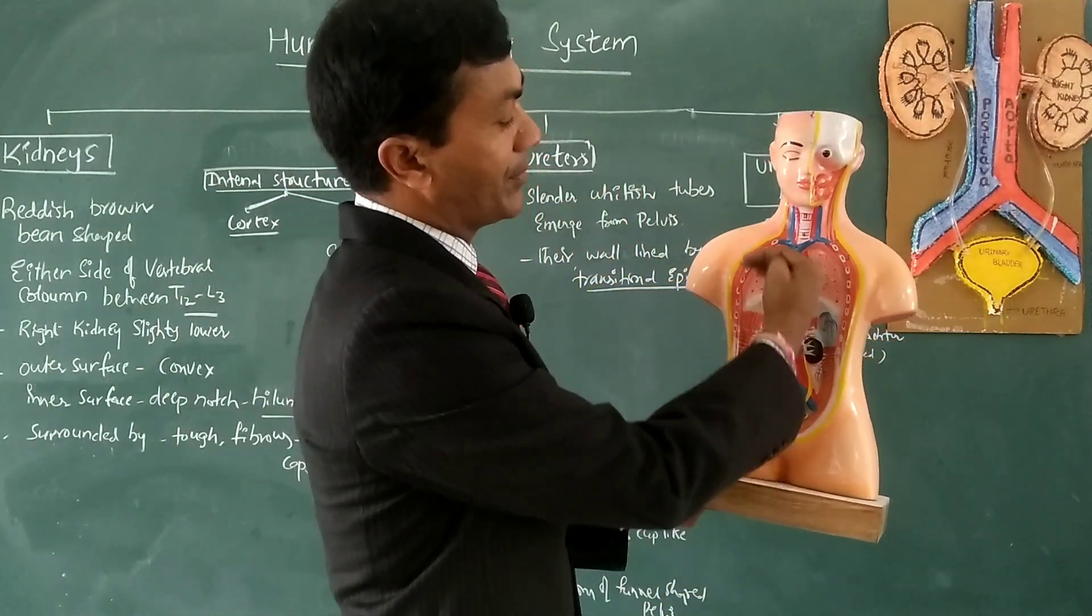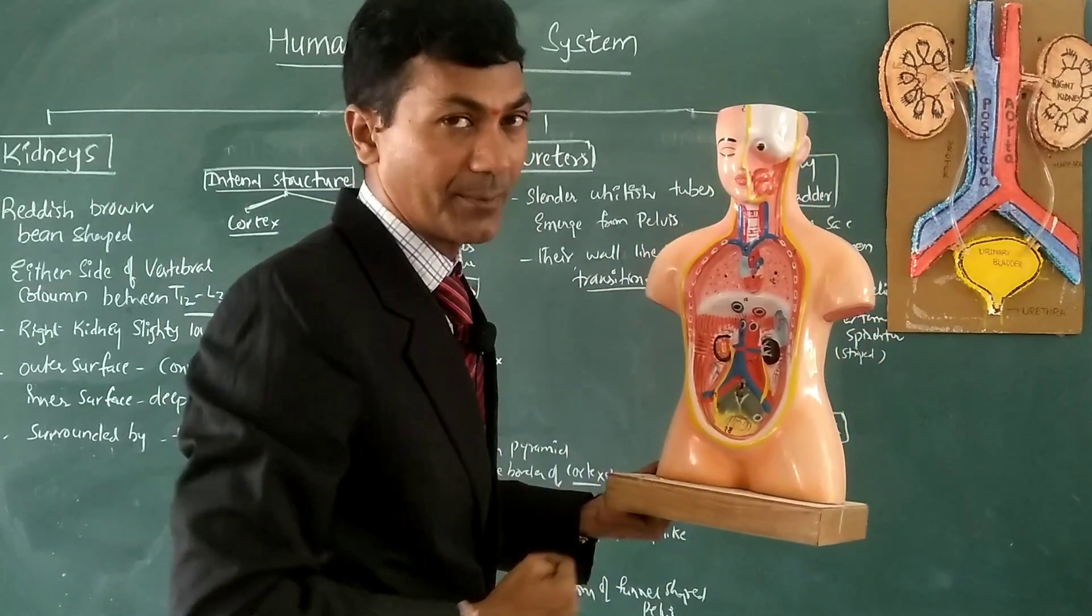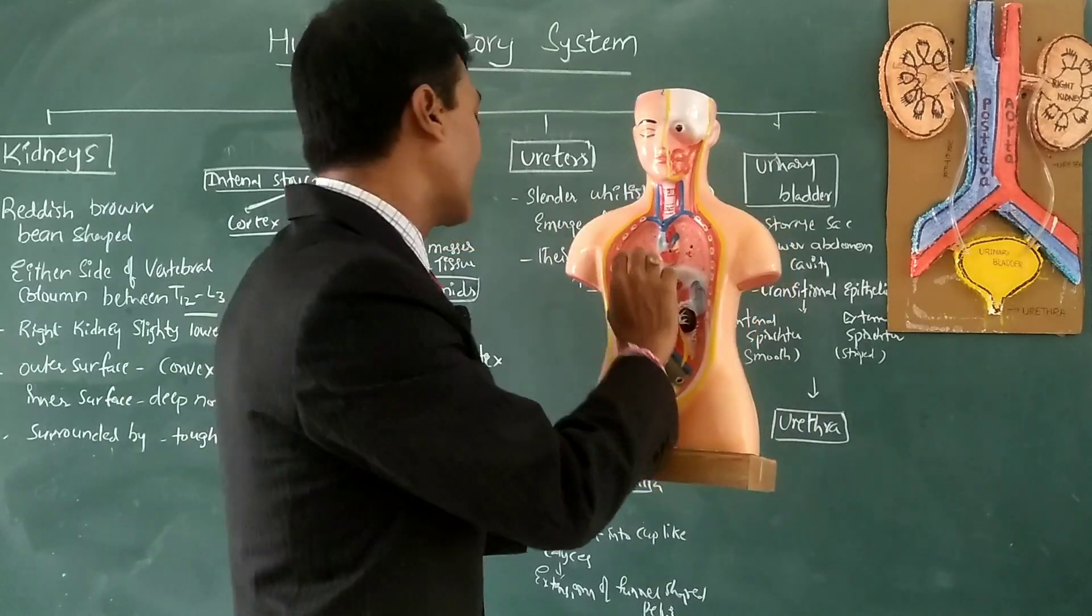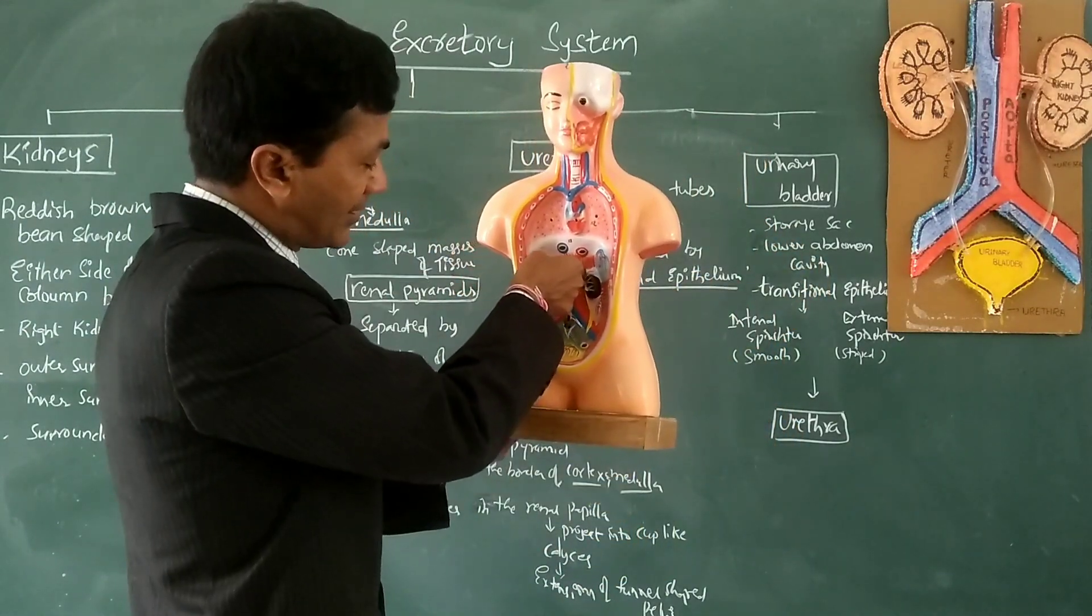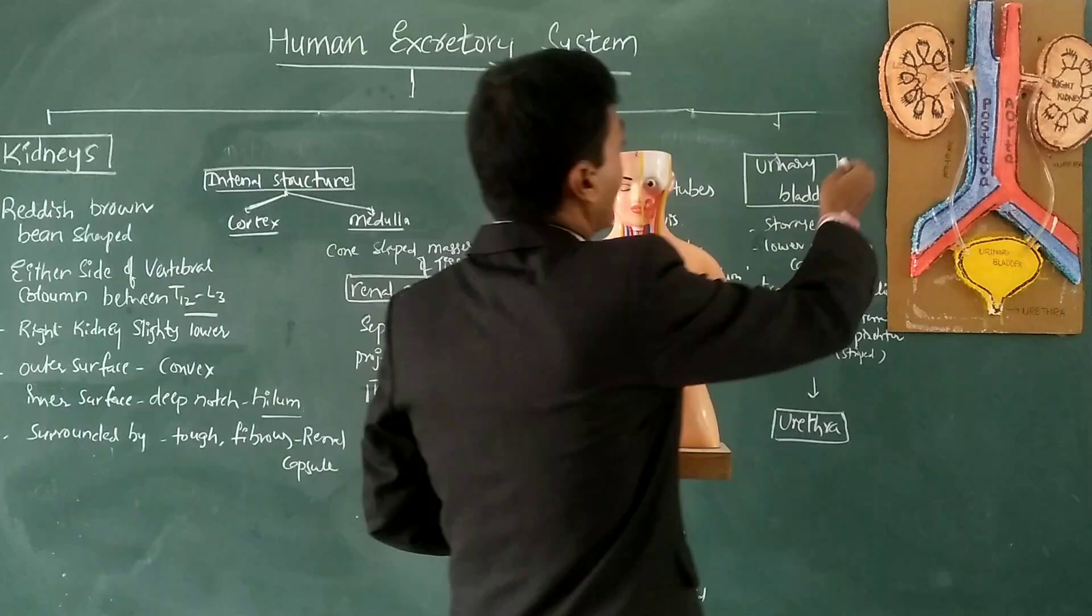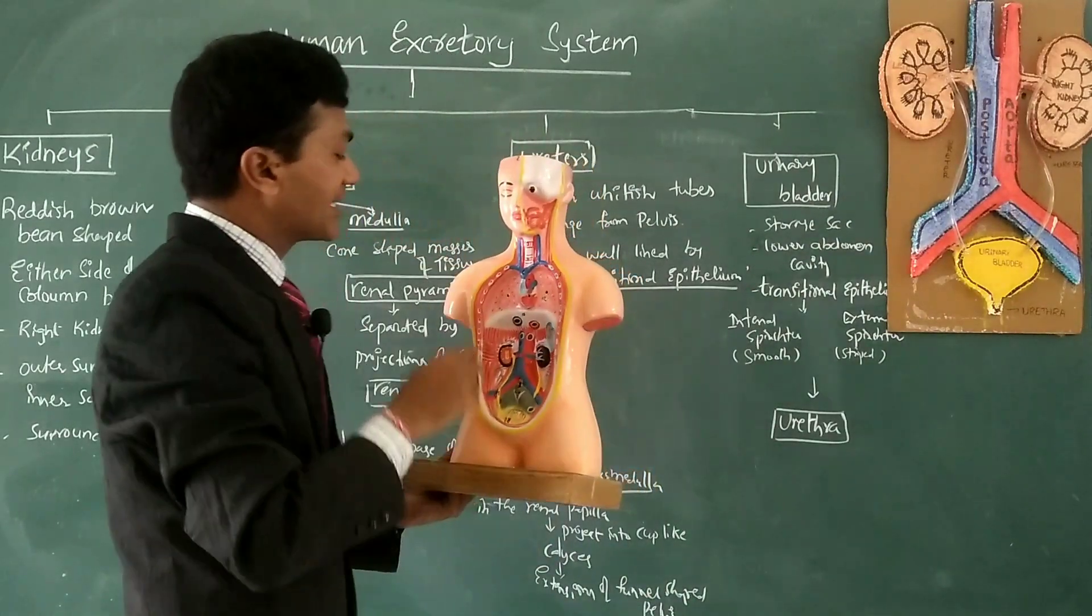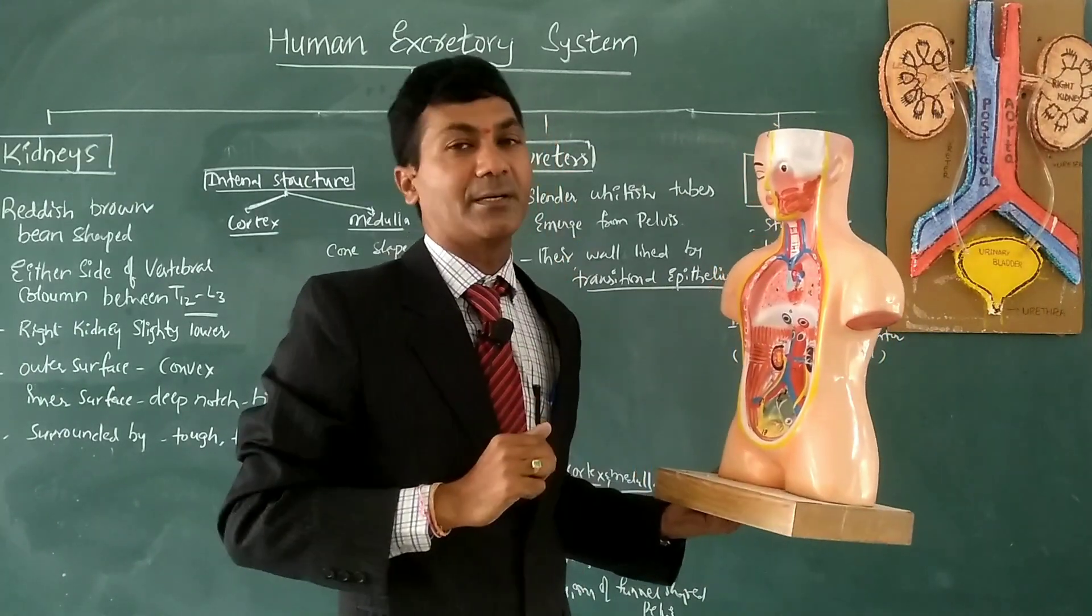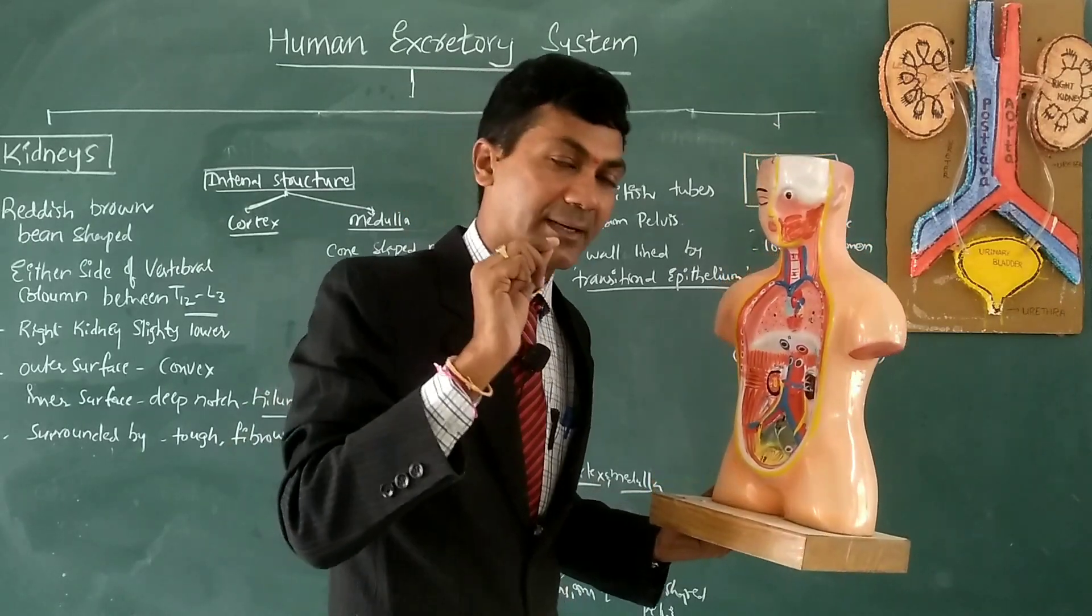Why? Because the upper abdomen cavity mostly comprises the liver, which occupies most of the area, so the right kidney is slightly lower. The outer surface looks convex and the inner surface has a notch called the hilum. Each kidney is surrounded by a tough fibrous capsule known as the renal capsule, which protects the soft tissue of nephrons.